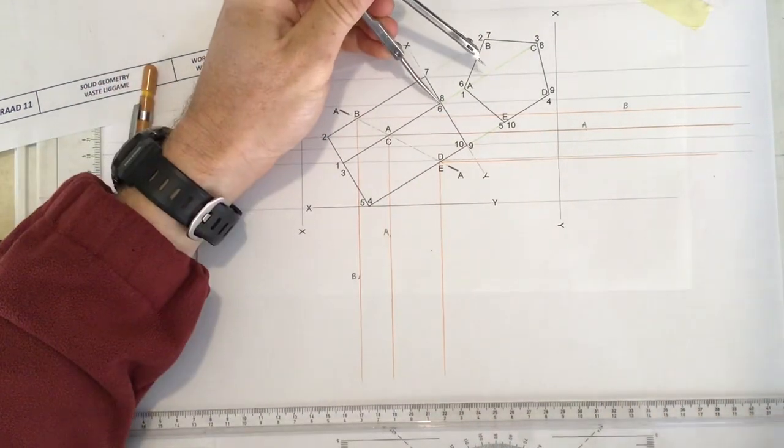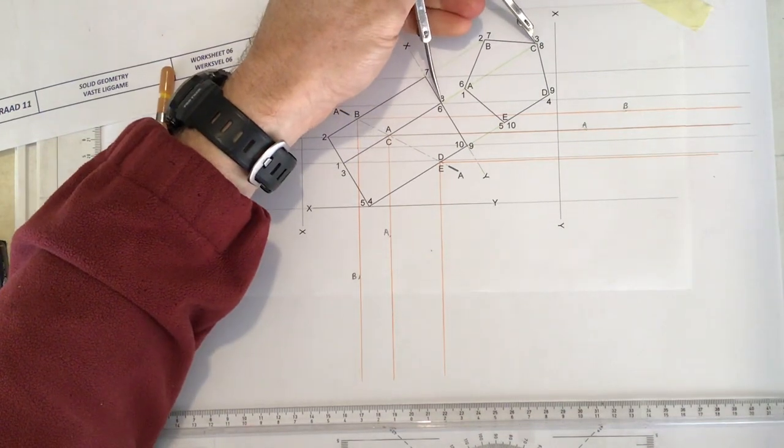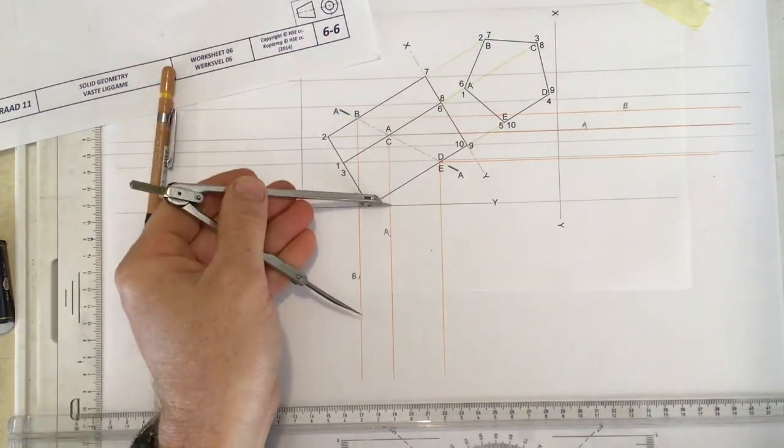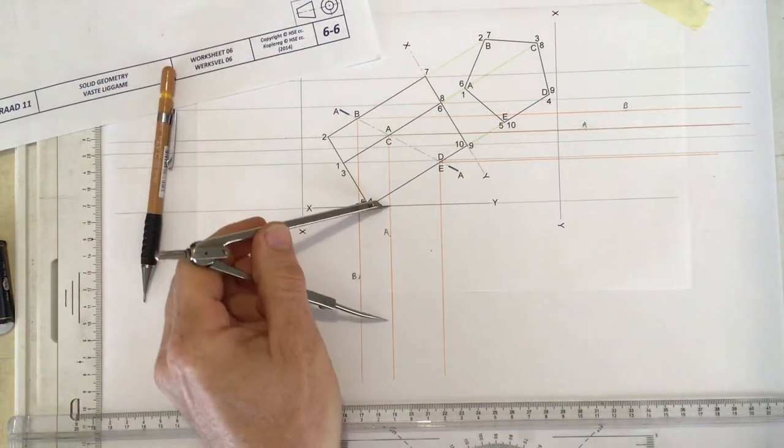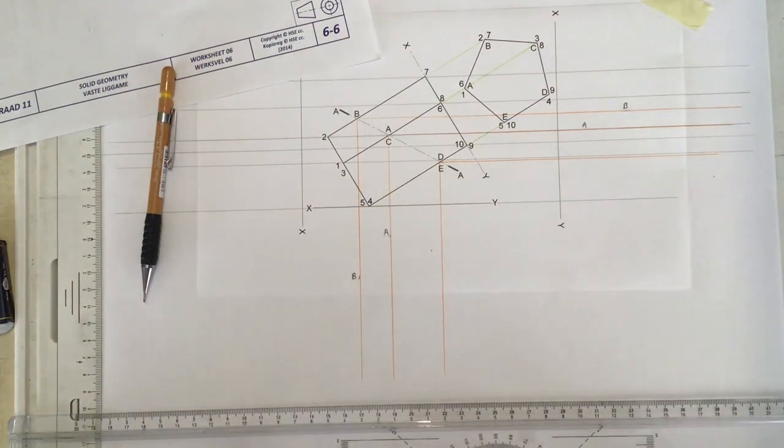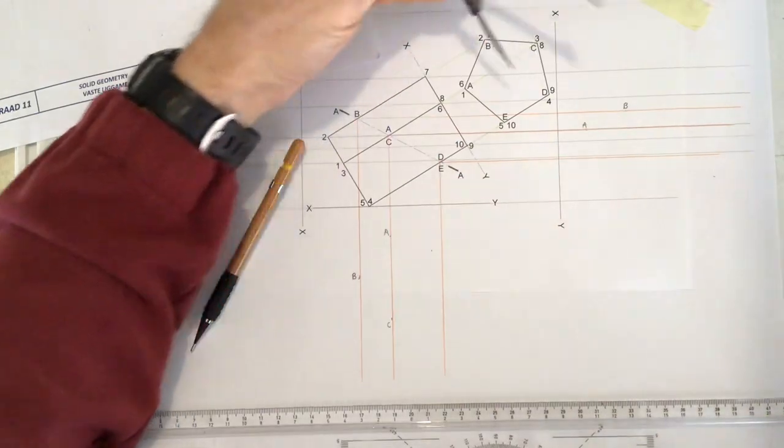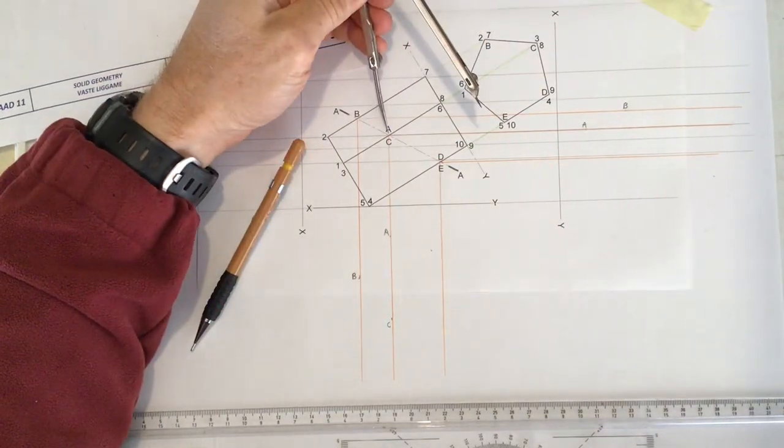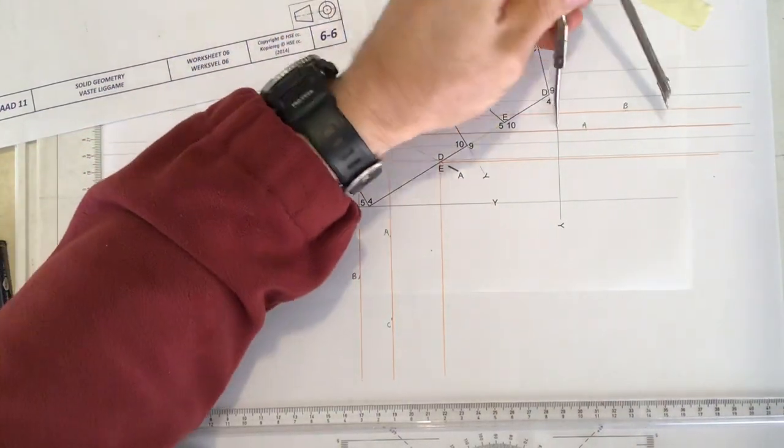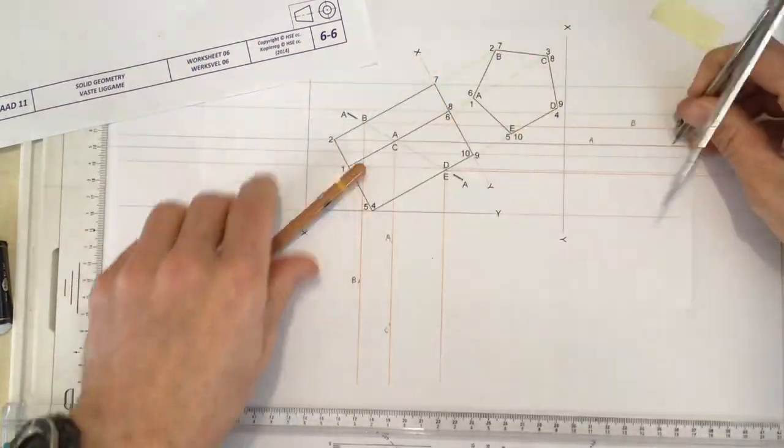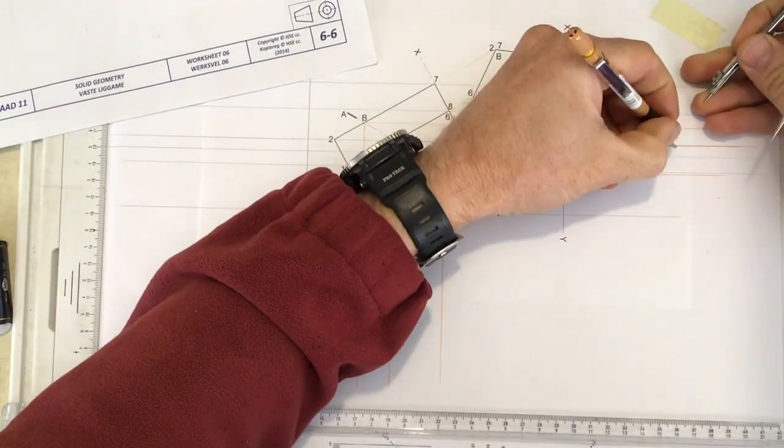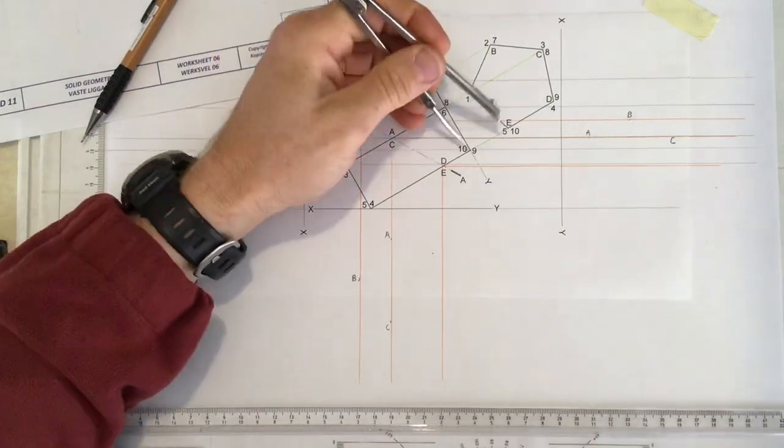Let's do C. Same story. Find C, come down here, plant that down there, label it C. Find C over here, there's C, take it across to the XY axis and plant that down there.